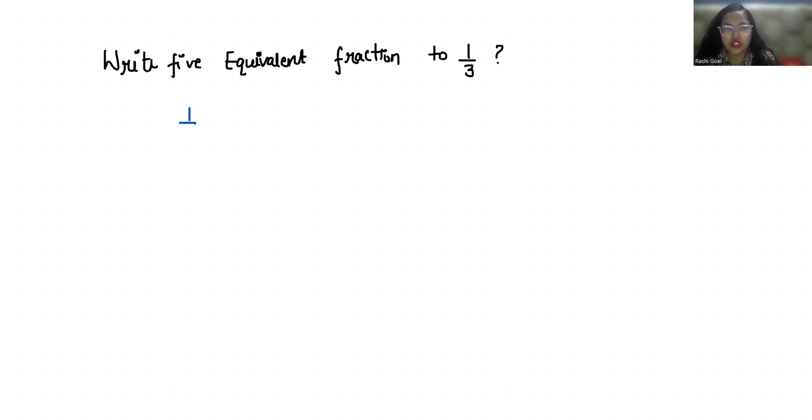So, 1/3 equivalent fraction - we can write it if we multiply 2 in numerator as well as denominator, it's 2/6. When we reduce it, it gives us 1/3, so it's one of the equivalent fractions.